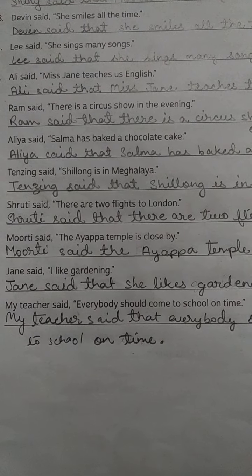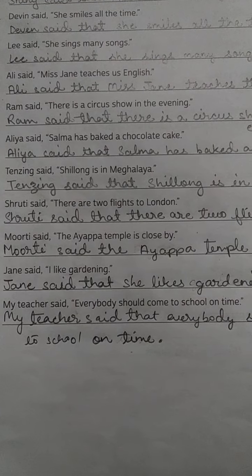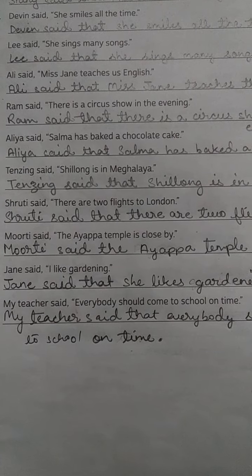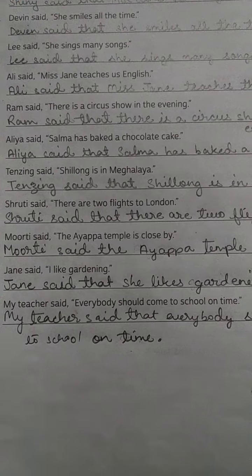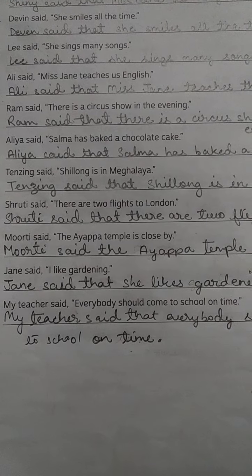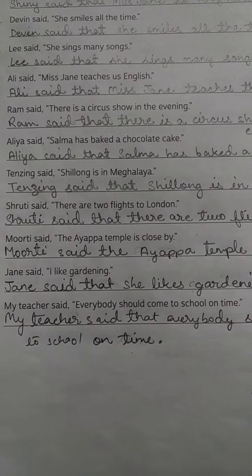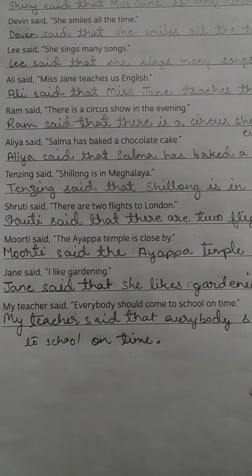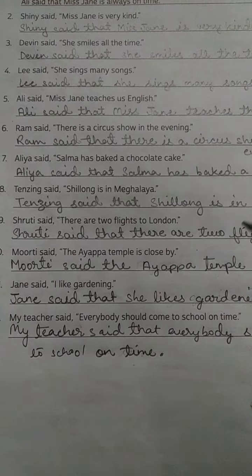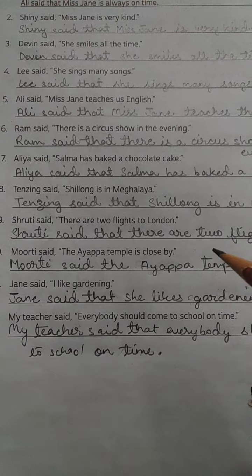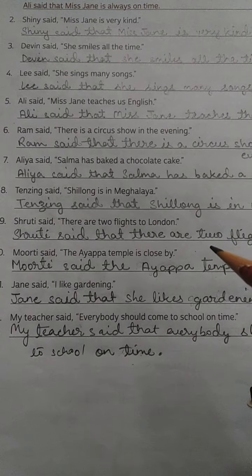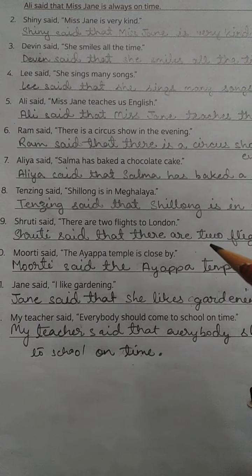Hello my dear students, good morning to all. Today's date is 24th December 2020, subject English grammar, class 4 book, the Grammarite book. My dear students, I have given this question as homework, so I will explain you the question and tell you the answer.